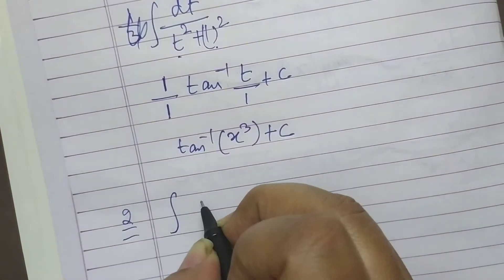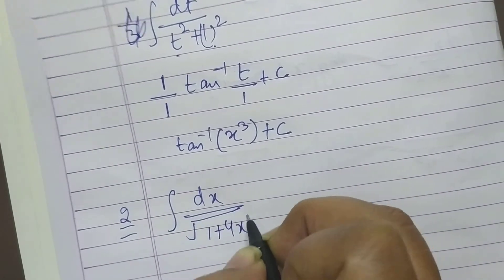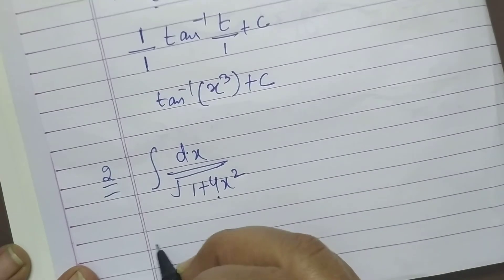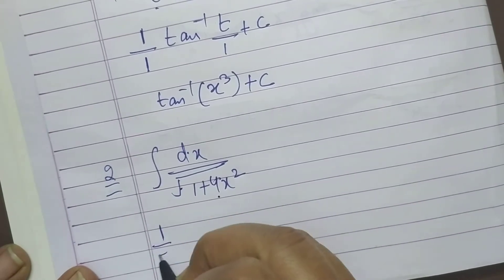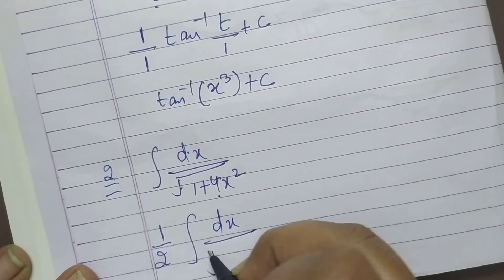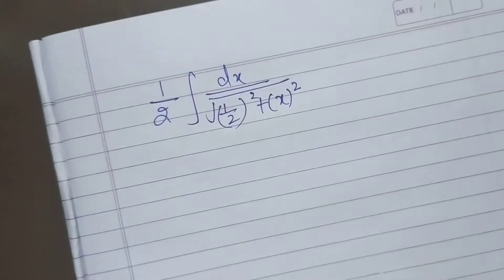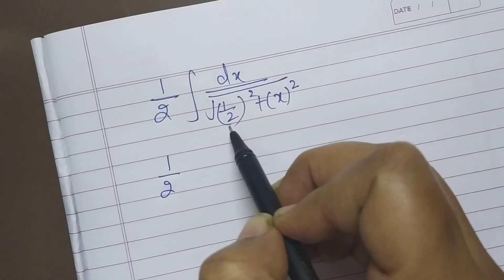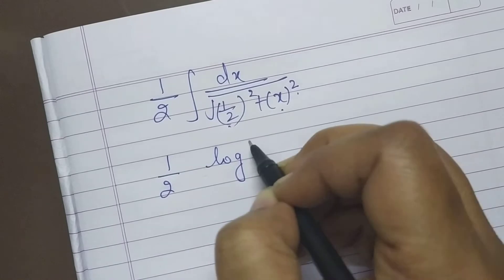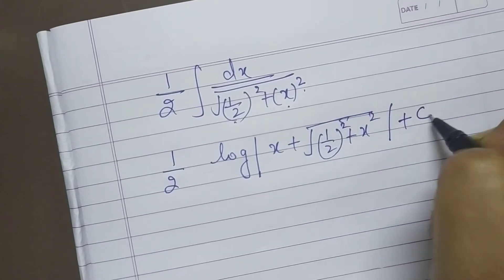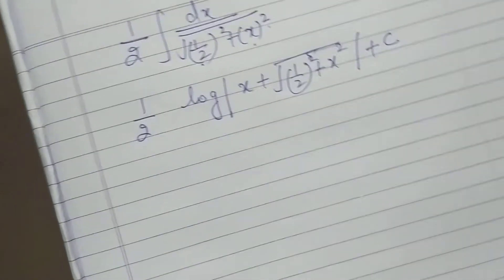Question 2: dx / √(1 + 4x²). Here the coefficient of x² is not unity, so take 4 outside the root — that gives 2 outside. Inside remains: dx / √(1/4 + x²), which is dx / √((1/2)² + x²). Apply the formula log|x + √(x² + (1/2)²)| + c, then simplify to get your answer.